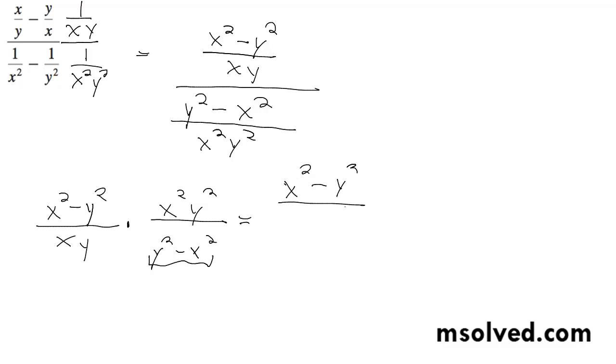X squared minus y squared over x y, times x squared y squared. And this becomes negative one times the quantity x squared minus y squared.